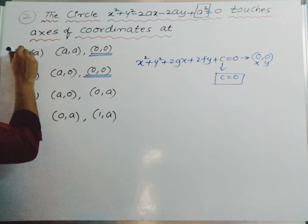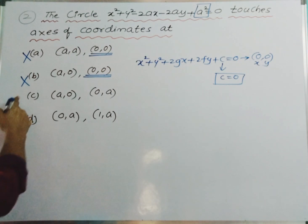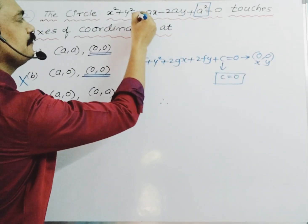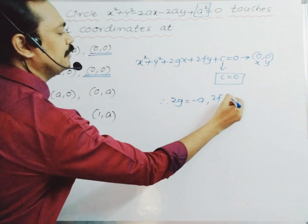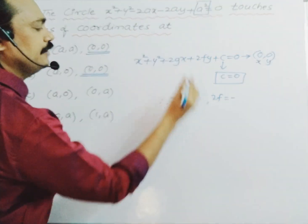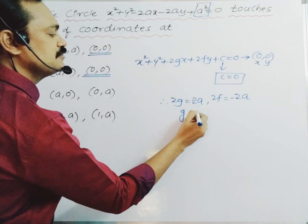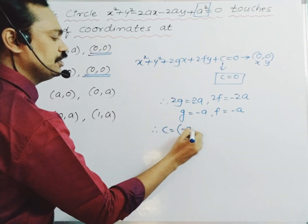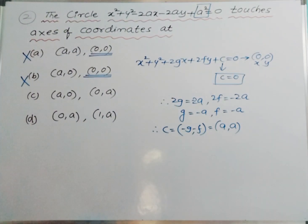So the first option is ruled out and the second option is ruled out. Let's go with the remaining two options. What is the center of this given circle? 2g is -2a and 2f is also -2a. So g equals -a and f equals -a. Therefore center equals (-g, -f) which is (a, a).